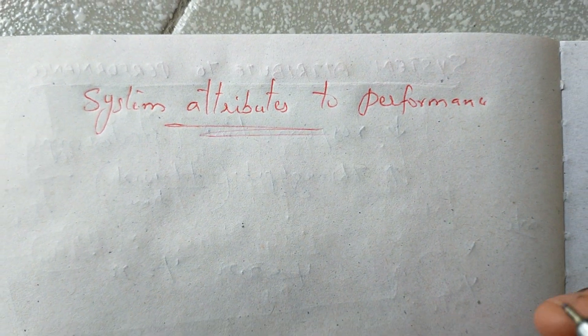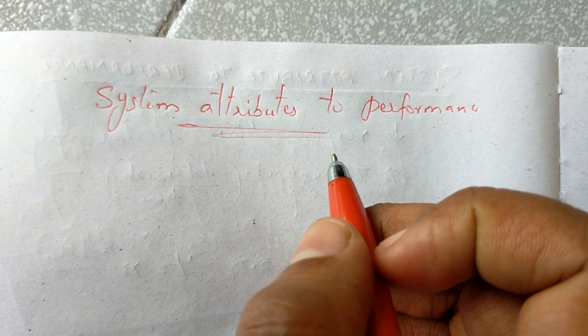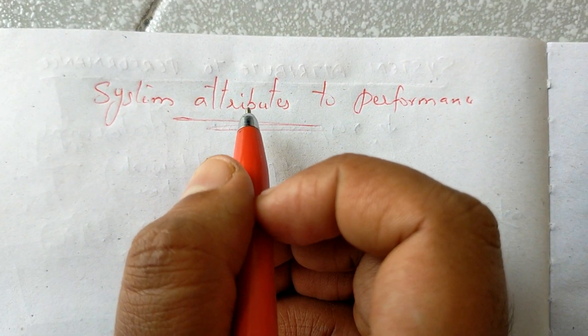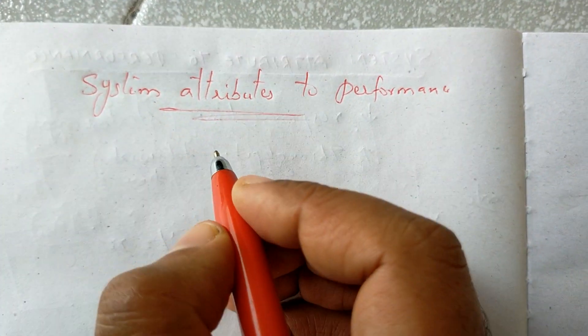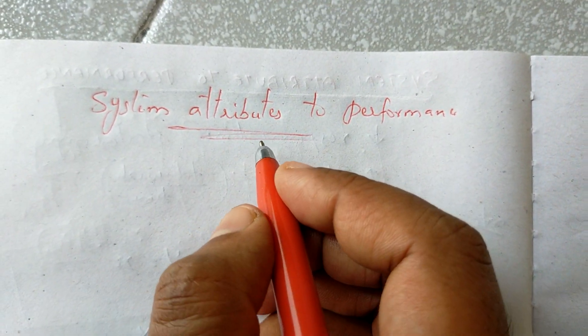Extended System Attribute Performance. We have a number of factors and attributes for a computer user. If we have a request, we have a pattern of response.